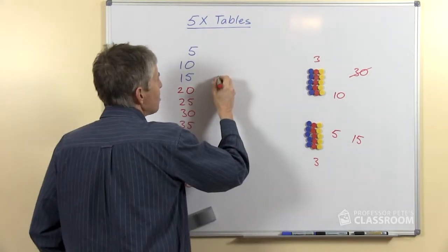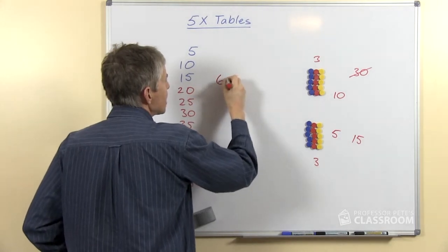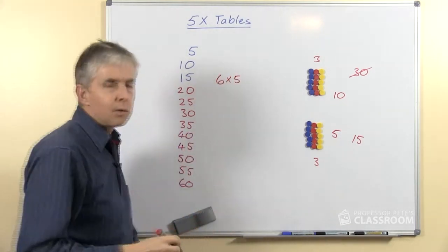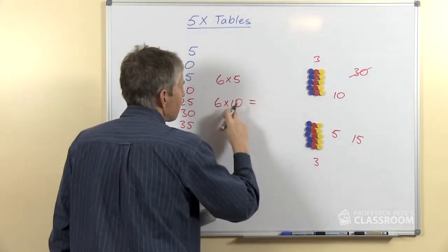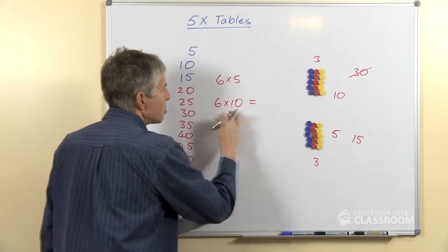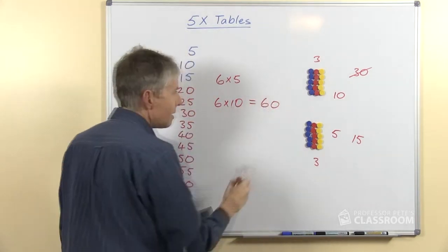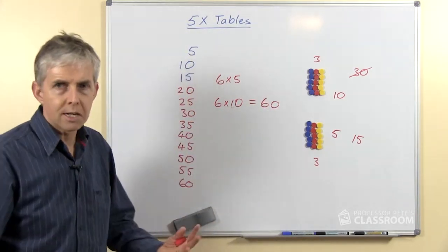So let me show you what I mean. Supposing we had 6 times 5 and we said what is 6 times 5? What would 6 times 10 be equal to? 6 times 10 of course is 60. Because that's what we call 6 10's.